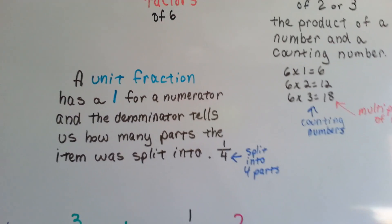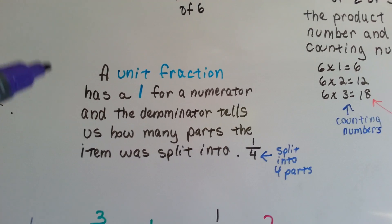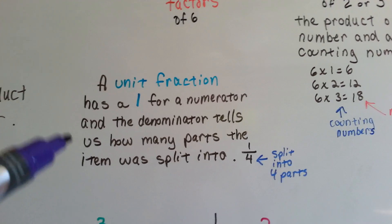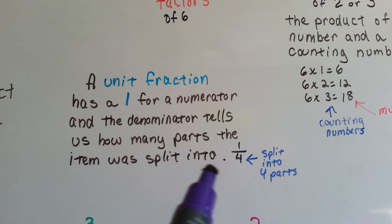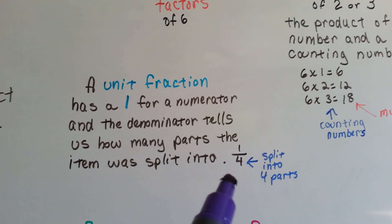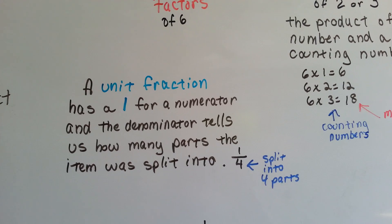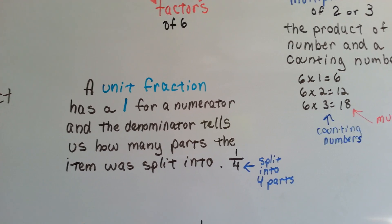I want you to also remember that we talked about before that a unit fraction has a 1 for a numerator and the denominator tells us how many parts the item was split into. So here's a unit fraction 1 fourth. The 4 tells us it was split into 4 parts and the 1 is the numerator. It's a unit fraction 1 fourth.